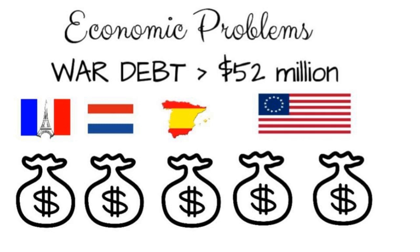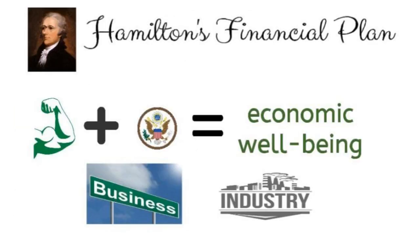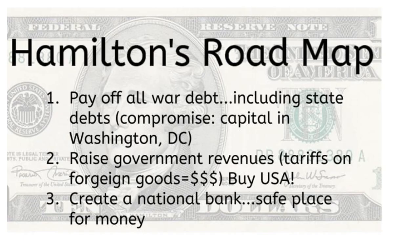Hamilton's financial plan showed his belief in a strong central government. He thought the national government should be stronger than the state governments, and he believed that government should encourage business and industry. In 1790, Hamilton proposed his financial plan to Congress. The plan included the following steps: one, paying off all war debts, including state debts; two, raising government revenues; and three, creating a national bank.